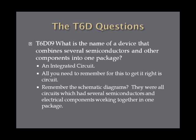What is the name of the device that combines several semiconductors and other components into one package? This is an integrated circuit, sometimes abbreviated IC. If you remember those schematic diagrams with all those semiconductors and electrical components scattered about, an IC combines all that into one neat little black rectangular component — the kind with a whole bunch of leads coming out that you've probably seen on a circuit board. Integrated circuit combines semiconductors and other electrical components in one package.